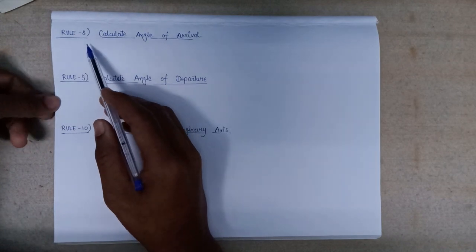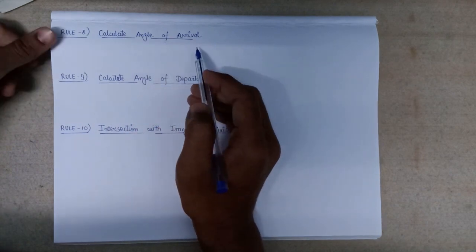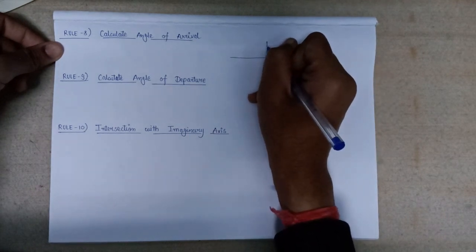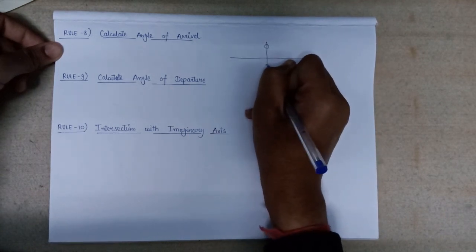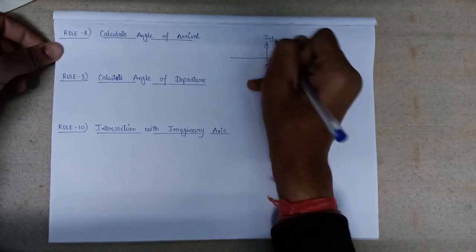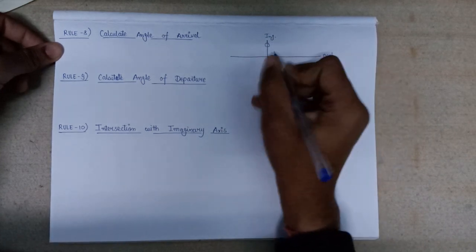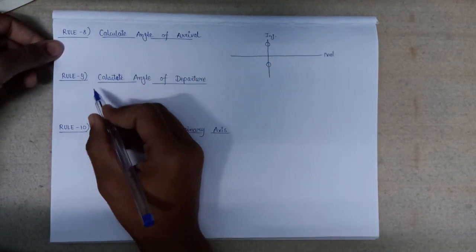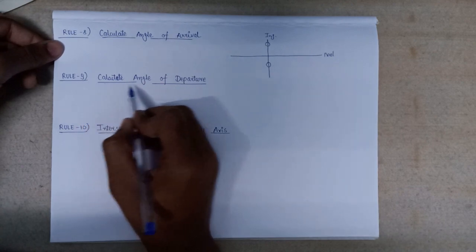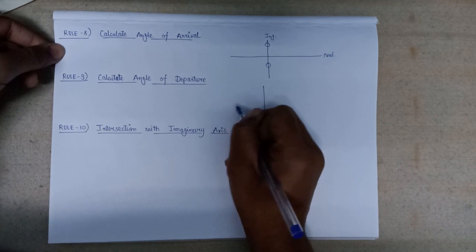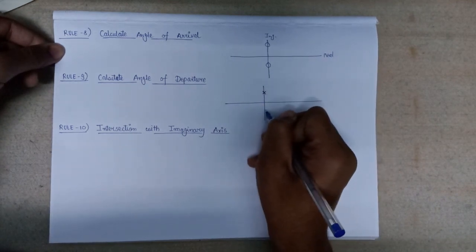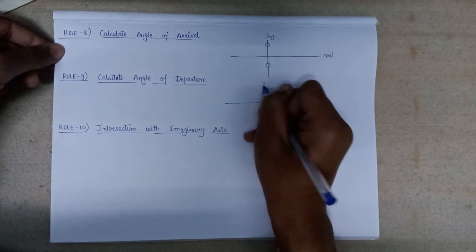Step number eight is calculating the angle of arrival, which is applicable only when zeros lie on the imaginary axis of the s-plane. Step number nine is the calculation of the angle of departure, which is only calculated when there are poles that lie on the imaginary axis of the s-plane.